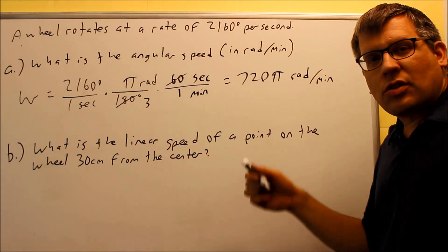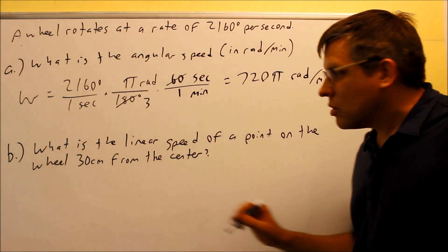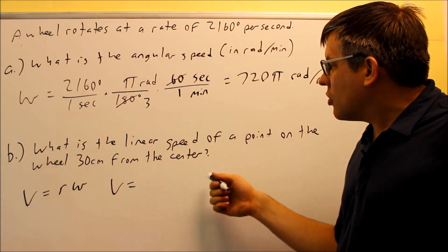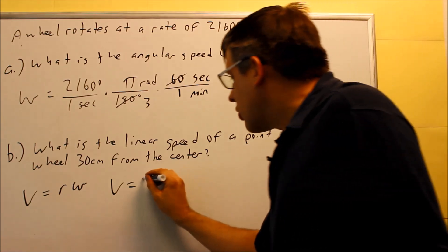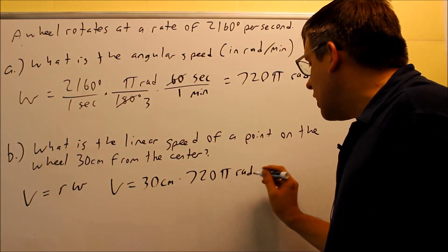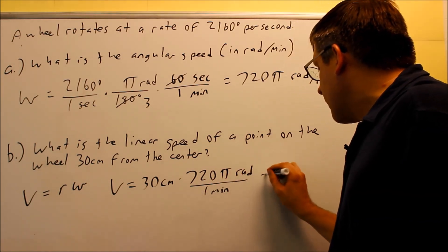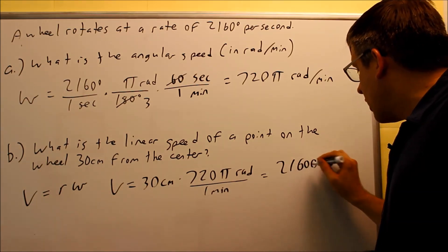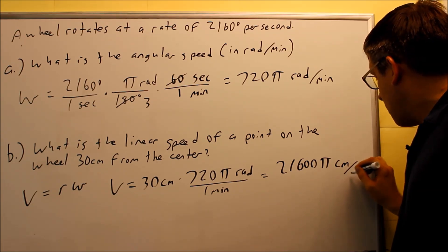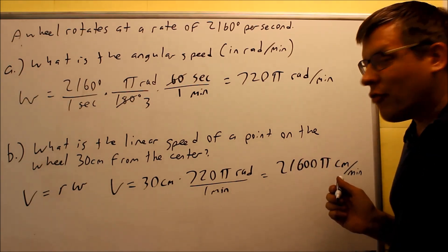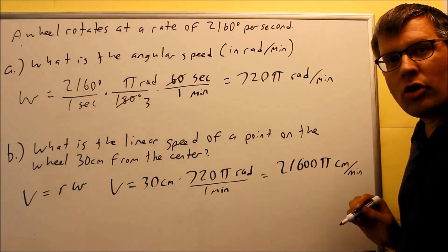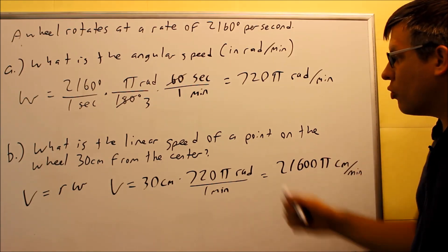For linear speed of a point 30 centimeters from the center, that 30 centimeters is the radius. Using v equals r times omega, we multiply 30 centimeters by 720 pi radians per minute. That gives 21,600 pi. Since radians are dimensionless, the units are centimeters per minute — matching the radius unit and the time unit from part A. So 21,600 pi centimeters per minute is the linear speed.